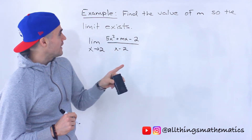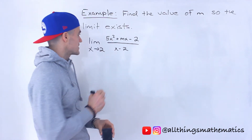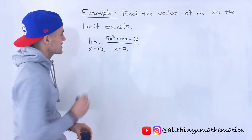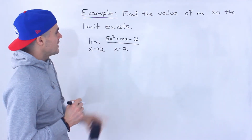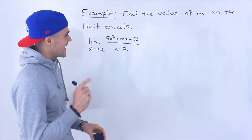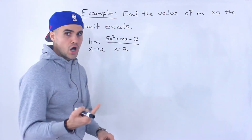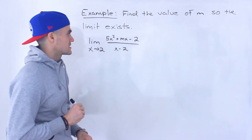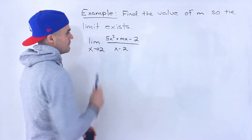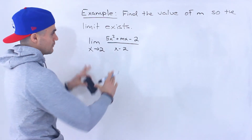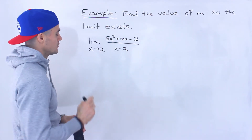We have to find the value of m so that this limit exists. We have the limit as x approaches 2 of (5x² + mx − 2) all over (x − 2). We've got to solve for this m value and make this limit exist.